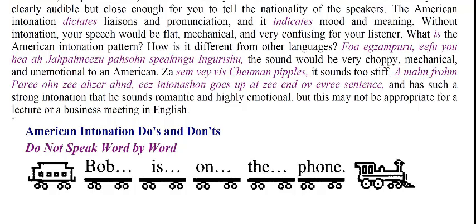What is the American intonation pattern and how is it different from other languages? For example, Japanese intonation sounds very choppy, mechanical, and unemotional to an American ear. German intonation sounds too stiff. A man from Paris, on the other hand, has an intonation that goes up at the end of every sentence and sounds romantic and highly emotional — but this may not be appropriate for a lecture or a business meeting in English.